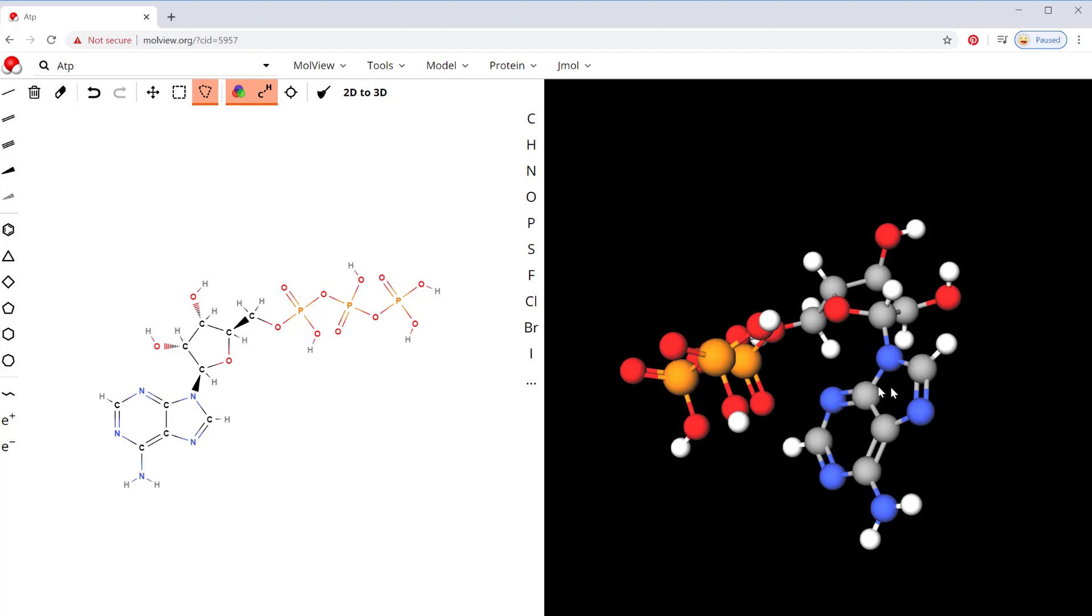Over here, this is the adenine. It's a base with a bunch of nitrogens in it. You can see some oxygens here. This is a sugar ring, so here are those oxygens, and then we have a new color. Here are the three phosphates with the orange for the phosphorus.